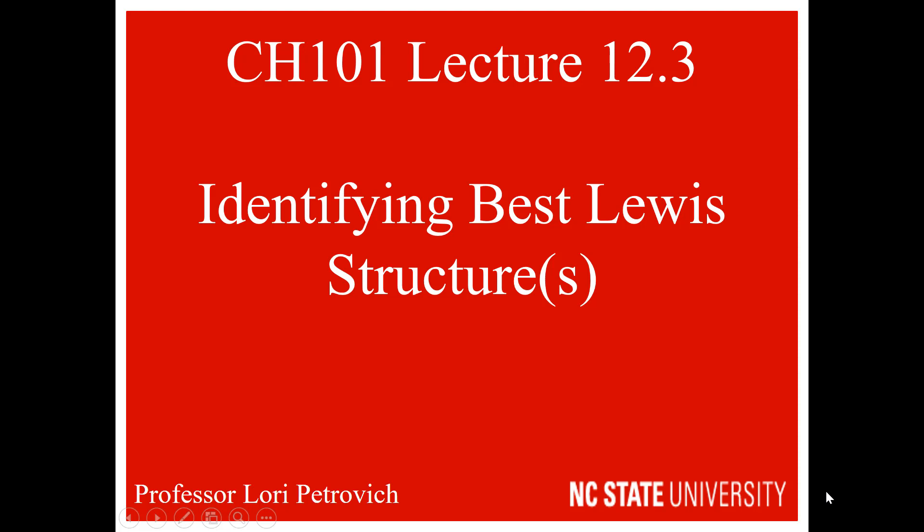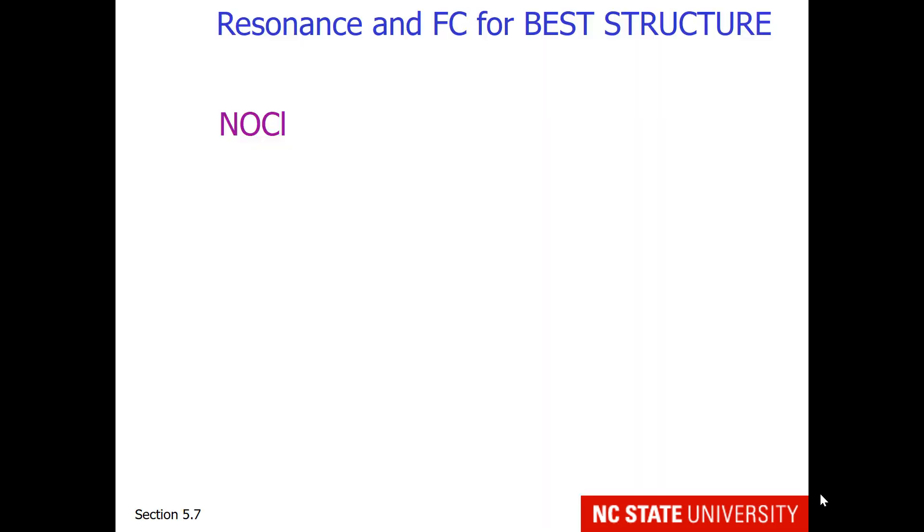The last part of this lecture involves identifying the best Lewis structure out of several possibilities. Resonance and formal charge can be used to analyze a Lewis structure to identify the best structure. For an example, consider NOCl.